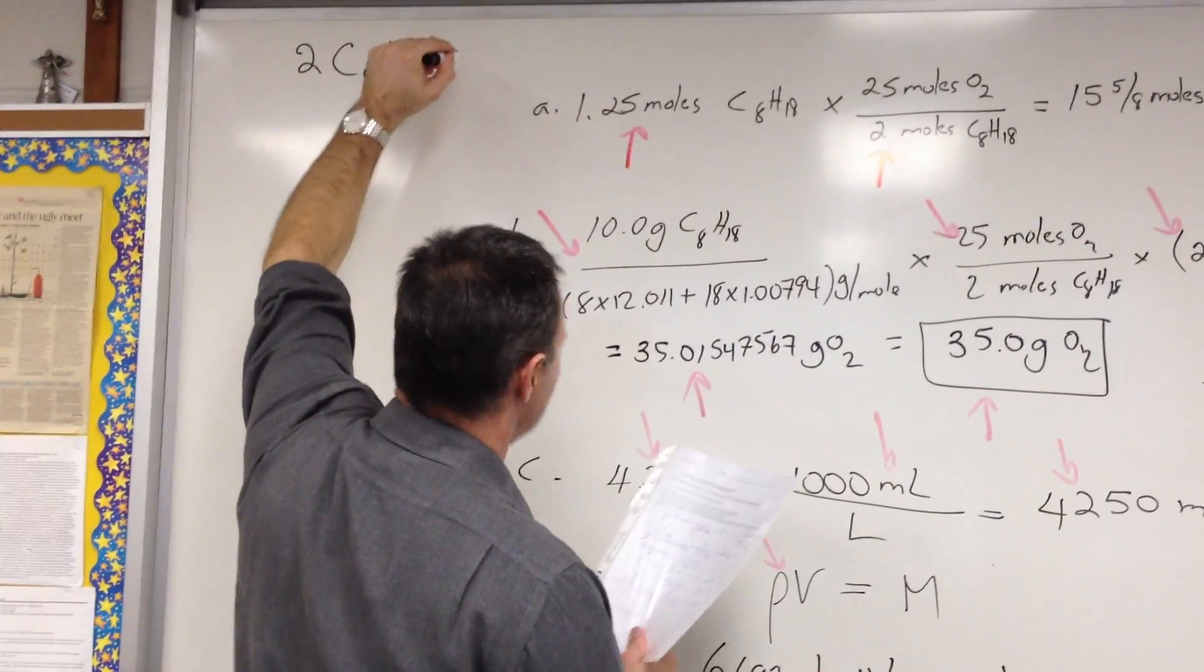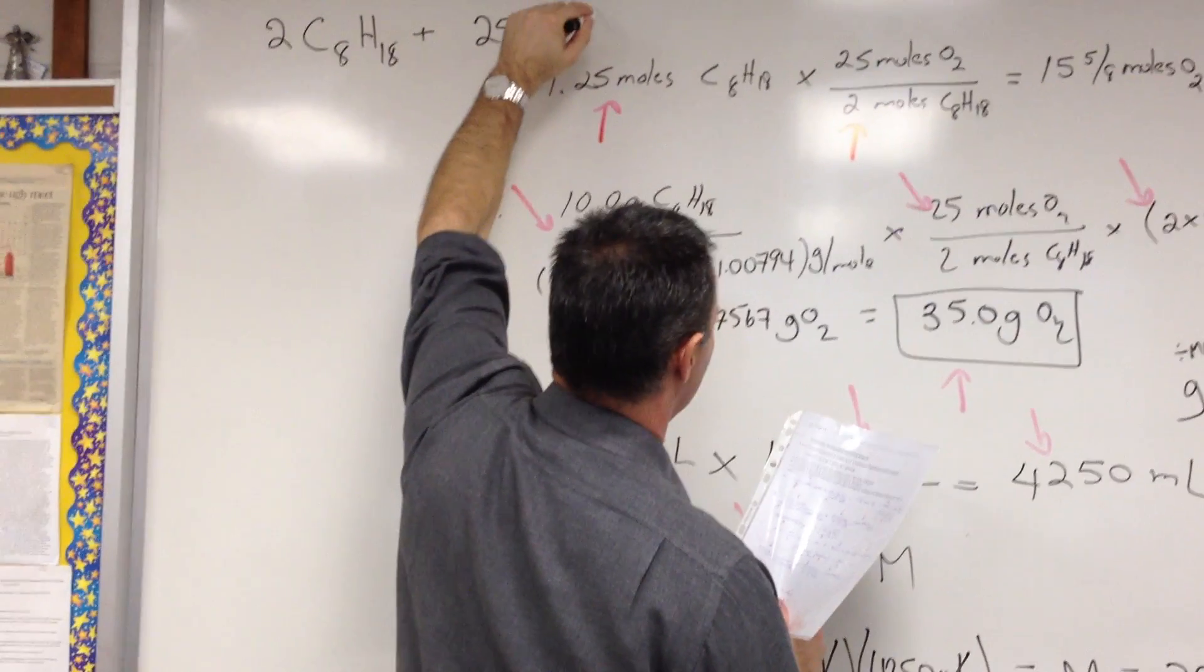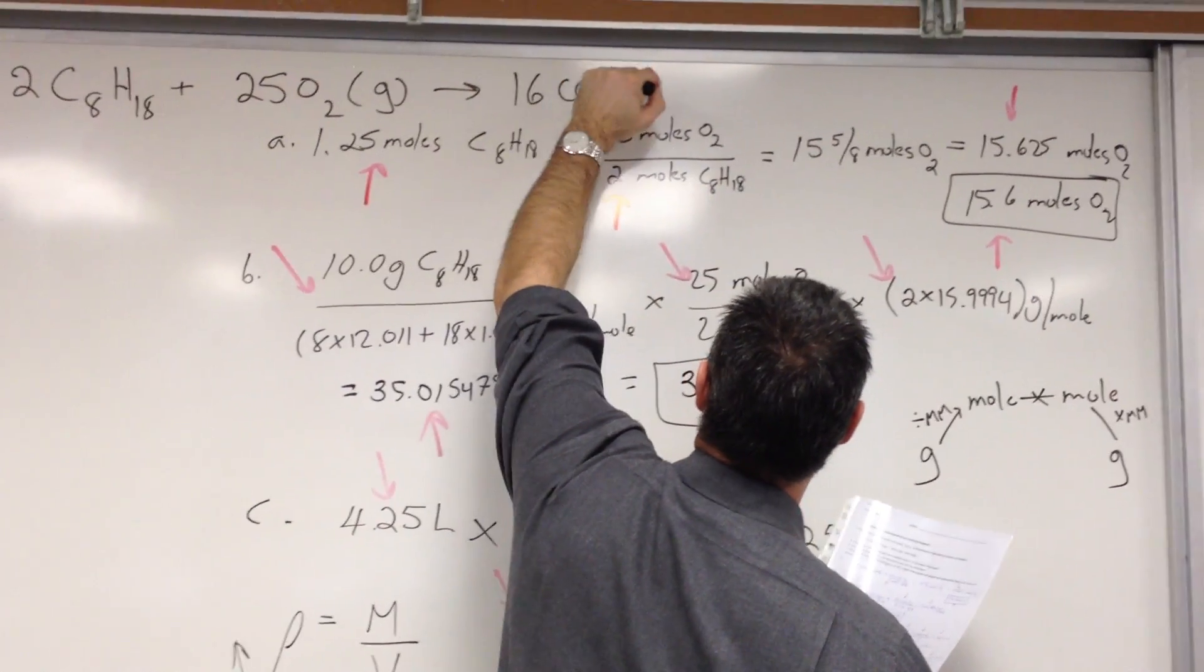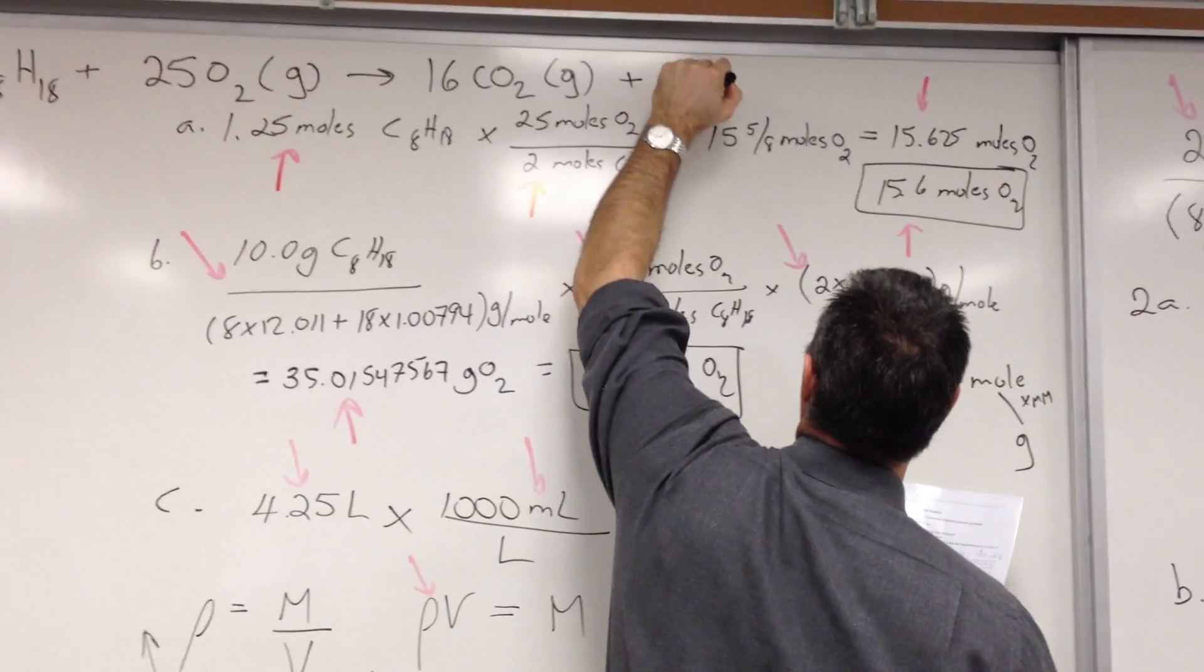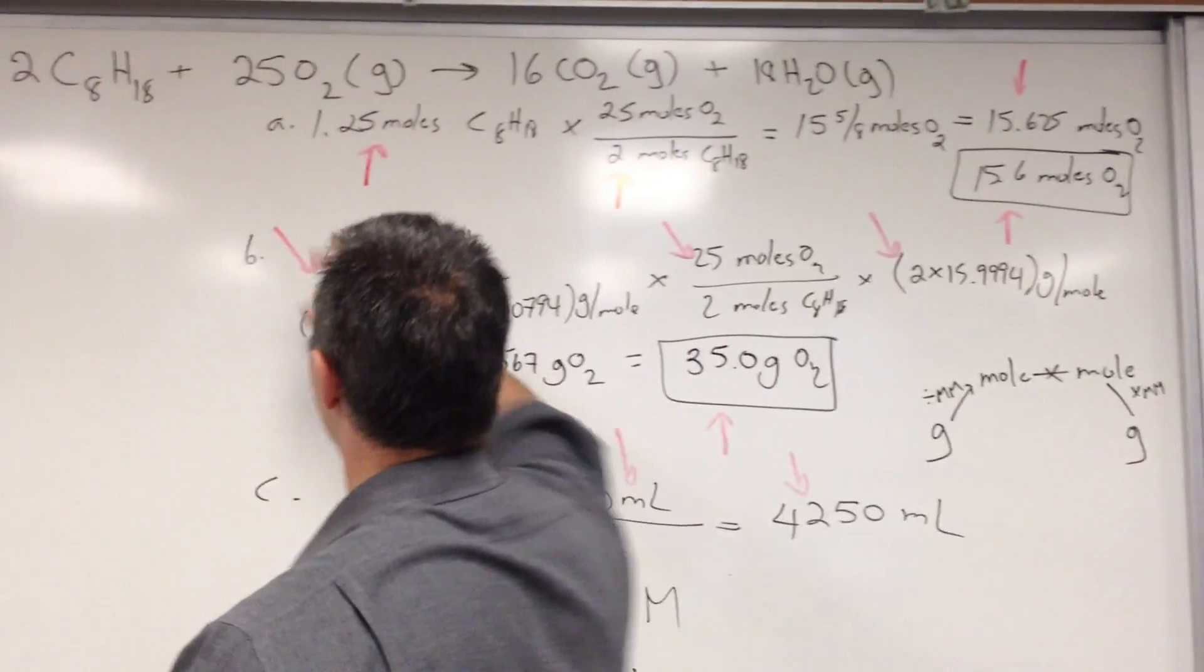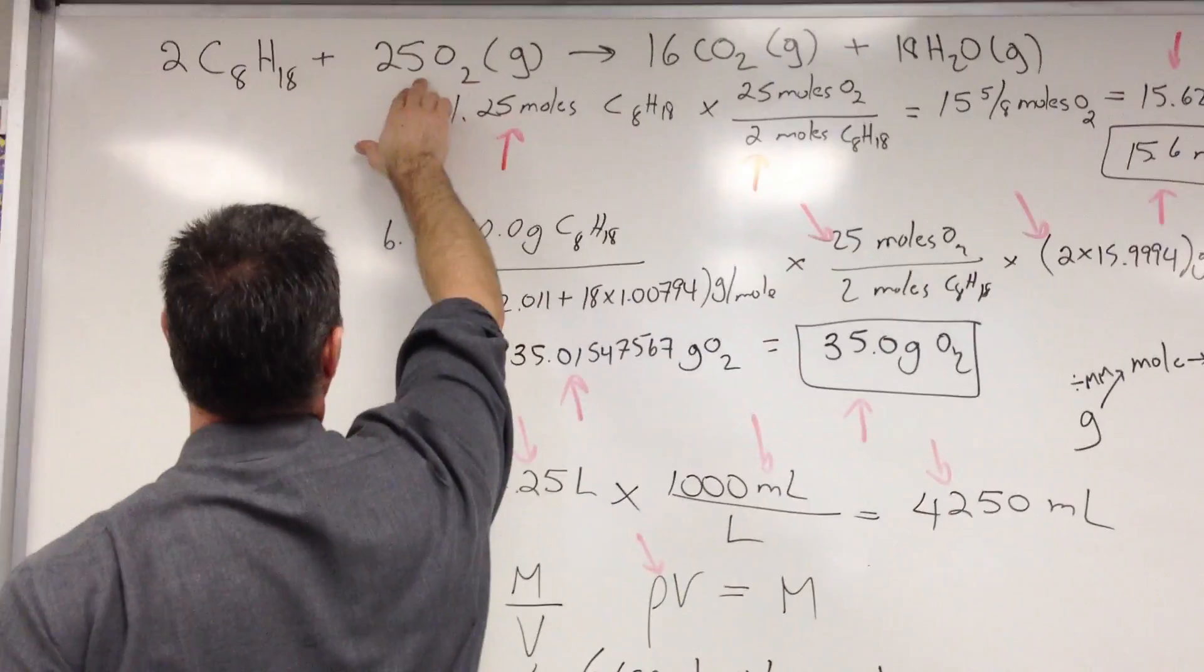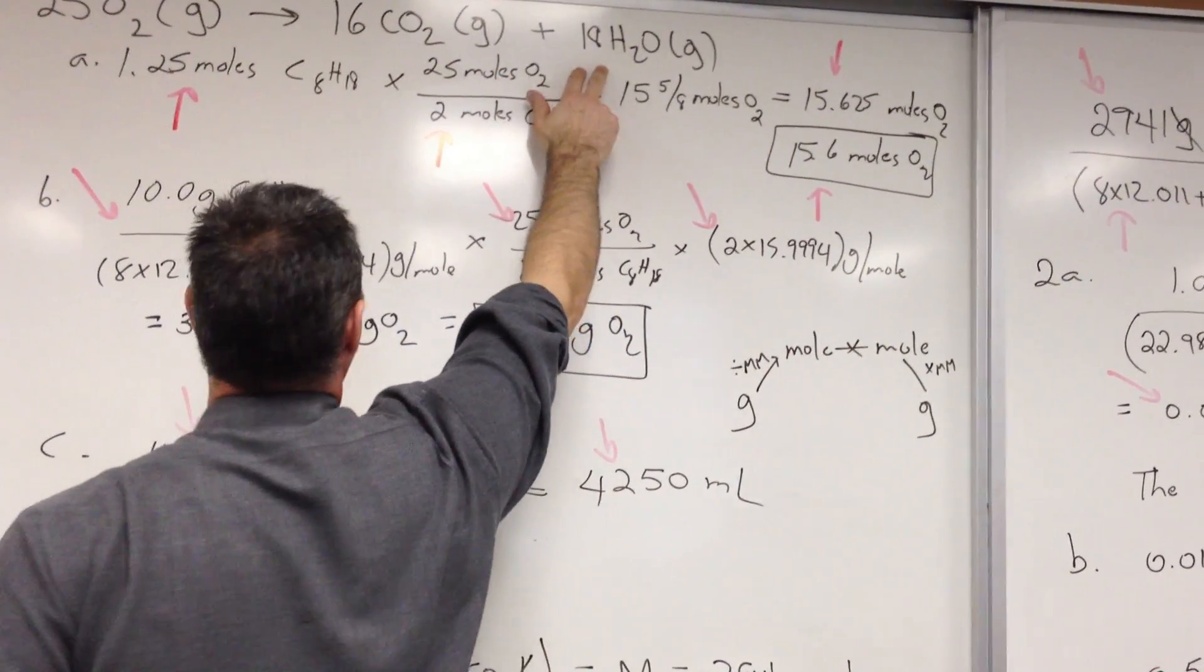And the balanced equation will include 25 oxygen molecules in this case. It gives 16 CO2 molecules, products are all gaseous, and 18 water molecules. So these numbers represent the stoichiometry of the reaction, meaning 2 moles of octane combined with 25 moles of oxygen, 16 moles of carbon dioxide, and 18 moles of water.